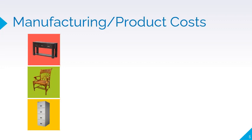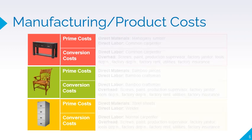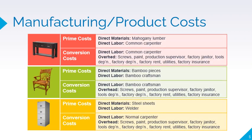Manufacturing or product costs are costs incurred in the production of a good or in the performance of a service. These costs are capitalized as inventory. Manufacturing costs consist of direct materials, direct labor, and factory overhead. They are further classified as prime costs and conversion costs. Prime costs refers to direct materials and direct labor. Conversion costs refers to direct labor and factory overhead. Factory overhead consists of indirect manufacturing costs — those manufacturing costs that are neither classified as direct materials nor direct labor.